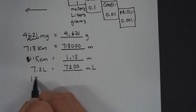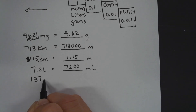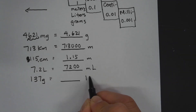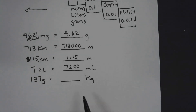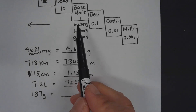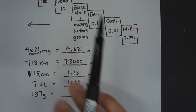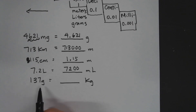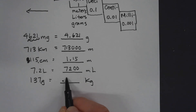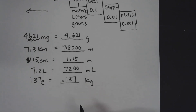We'll take a look at one more: 137 grams, converting to kilograms. We're going from a smaller unit to a larger unit, moving to the left three places. Moving the decimal three places to the left gives us 0.137 kilograms.